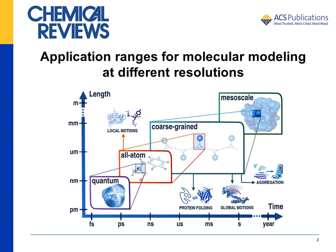This slide shows approximate application ranges for protein modeling at different resolutions – quantum, all-atom, coarse-grained and mesoscale. The horizontal line shows simulation timescales and the vertical line presents system sizes. As shown in the plot, the classical computational modeling of proteins in all-atom resolution remains inaccessible for many protein systems. Lowering the level of protein representation from all-atom to coarse-grained significantly extends the modeling opportunities to much larger simulation timescales and system sizes.